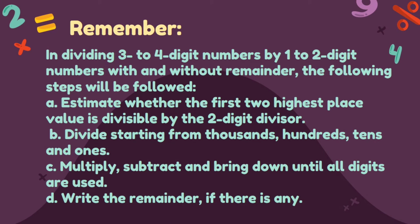Remember, in dividing 3 to 4-digit numbers by 1 to 2-digit numbers with and without remainder, the following steps will be followed: Estimate whether the first to highest place value is divisible by the divisor. Divide starting from thousands, hundreds, tens, and ones. Multiply, subtract, and bring down until all digits are used. Write the remainder if there is any.